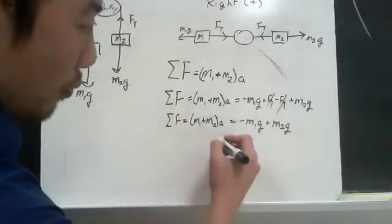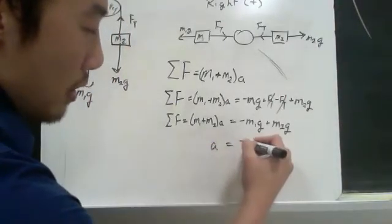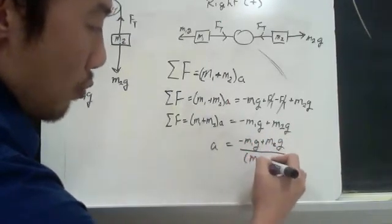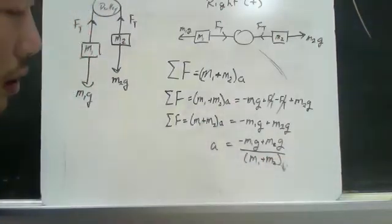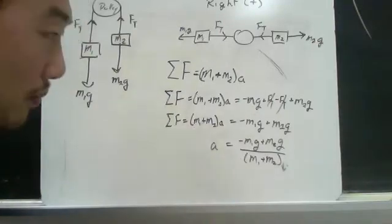For example, if you're looking for acceleration, it would look like this. Acceleration is equal to negative m1g plus m2g, all divided by m1 plus m2. And we got that by dividing both sides by the sum of the masses.